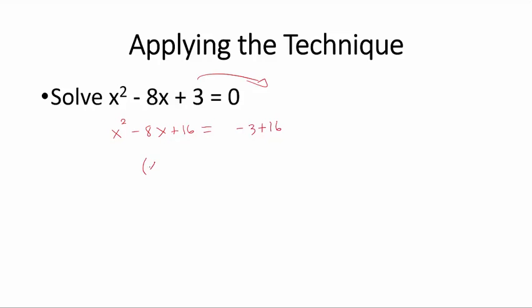We know that this factors as x minus 4 squared is equal to 13. If we now take the square root of both sides of this equation, we get that x minus 4 is equal to plus or minus the square root of 13.